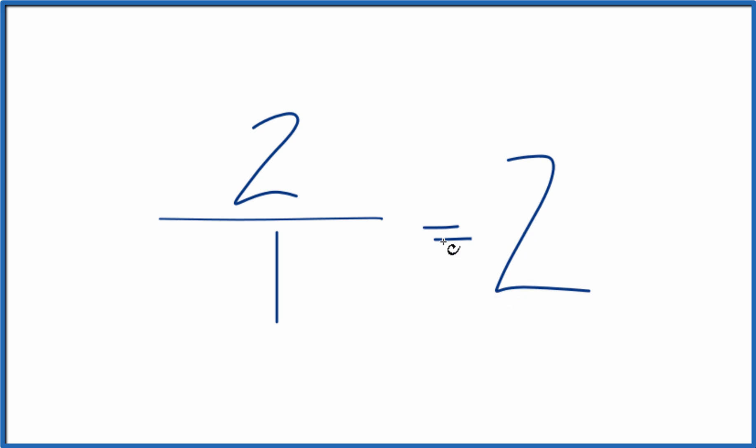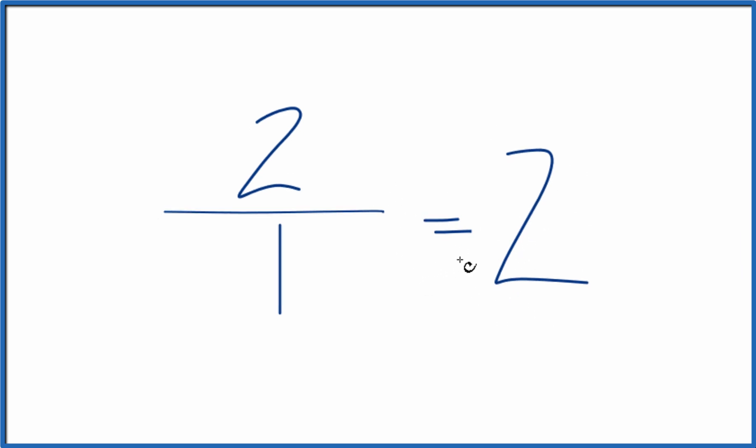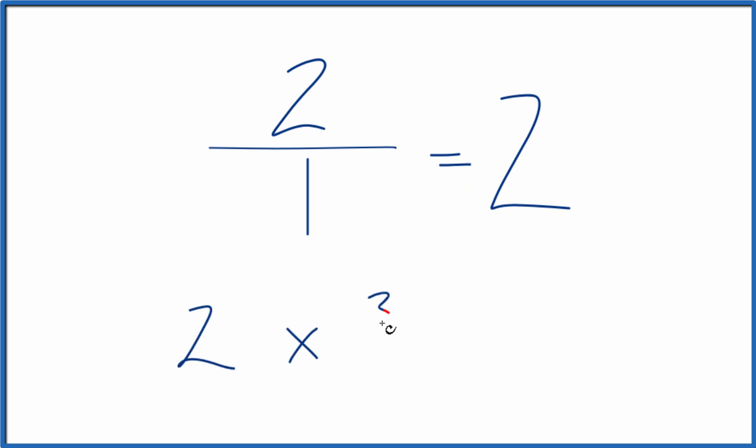It's useful to think about something like 2 as 2 over 1. Sometimes when you're doing math, say you want to multiply 2 times 3 fourths here. If you think of it as 2 over 1, then the multiplication is a lot easier.